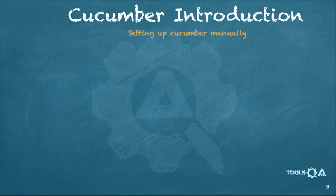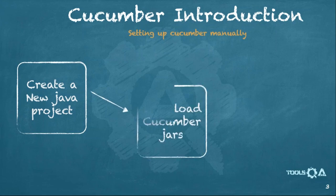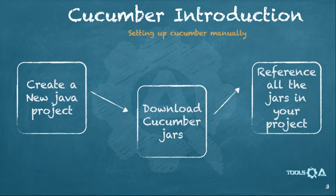So, setting up Cucumber manually — that is the first topic of this class. How can we set up a Cucumber project manually? It's a three-step process. All you have to do is: create a new Java project in the IDE of your choice — in our case, Eclipse. Once you have created the project, download all the jars required for the Cucumber tool. And then at the end, associate all the jars with your project. That's all you have to do. Let us quickly see how we can do that.